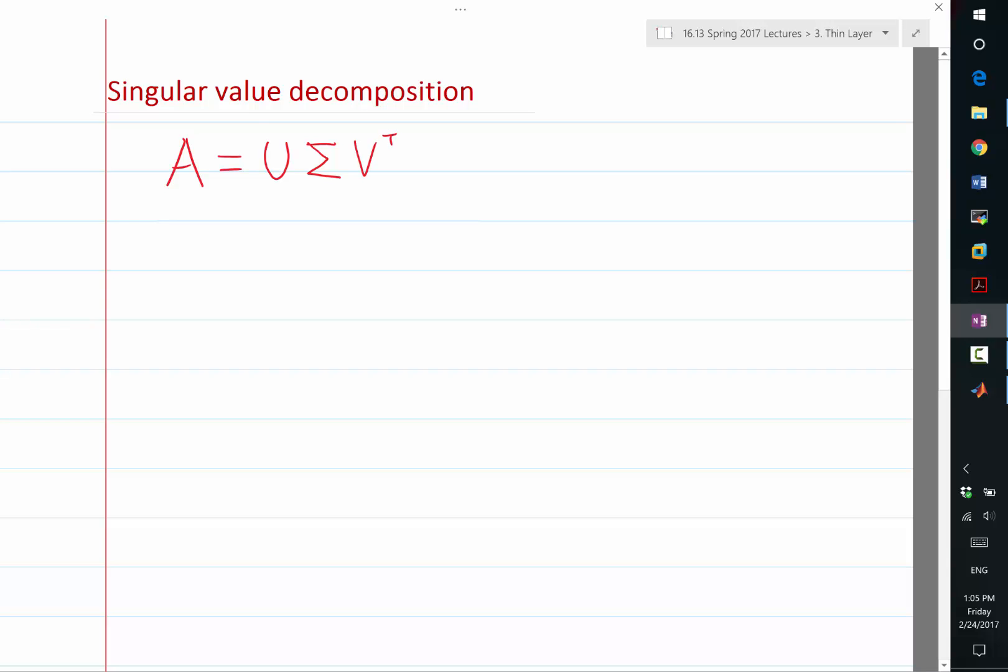The form here looks a little bit like eigenvalue decomposition, right? But there is a critical difference. First of all, U and V are not the same matrix, they are different. And two is that the V has a transpose instead of an inverse.